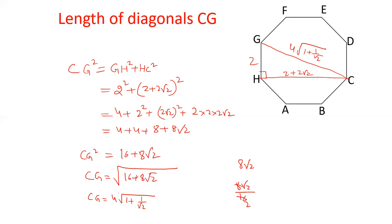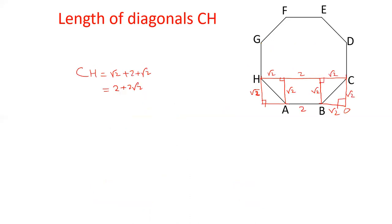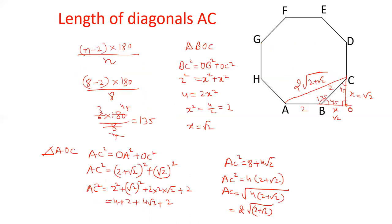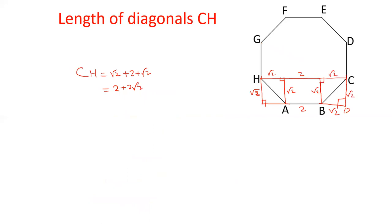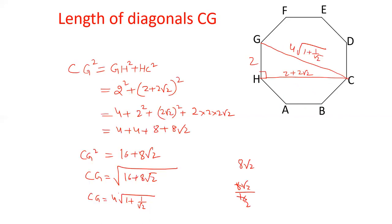Like this we can calculate the length of each diagonal of a regular octagon. The first diagonal AC equals 2 under root (2 plus root 2), the value of CH is 2 plus 2 root 2, and the value of CG is 4 under root (1 plus 1 by root 2). Friends, I hope you liked this video. Please like our video and subscribe to the channel.